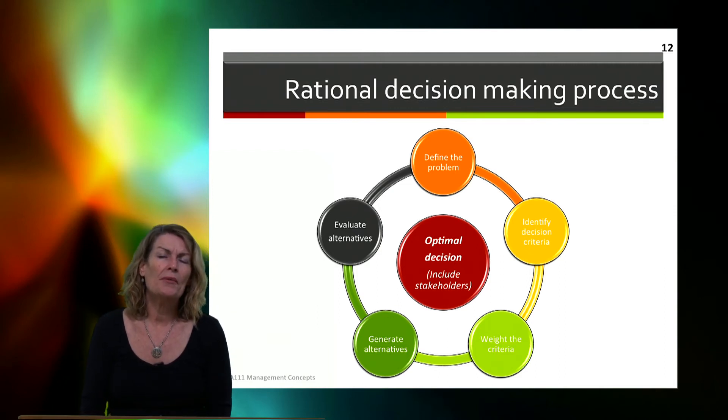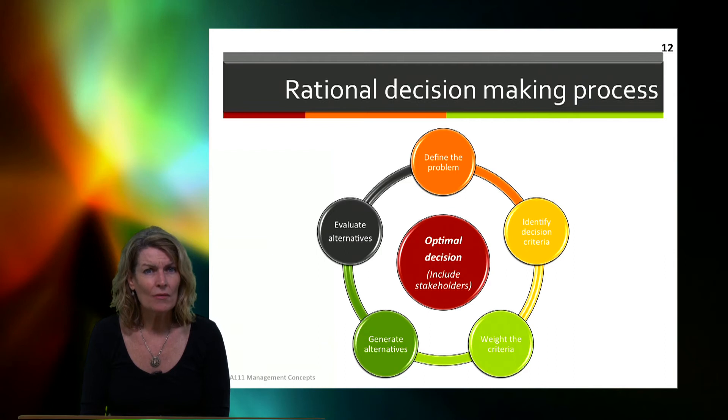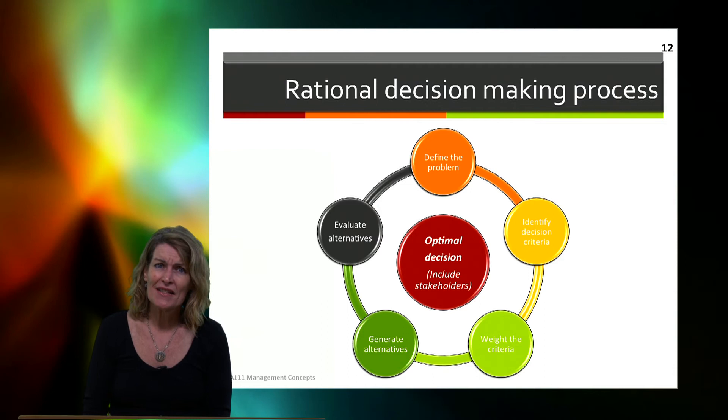So in the top bubble, the orange one, we look at defining the problem. Einstein said 95% of problem-solving is in defining the problem. So this is a key aspect of looking at decision-making. Looking at what is the problem, what is the issue, what is happening here? And sometimes this takes time. Sometimes this means that we should be talking to people, including other stakeholders.